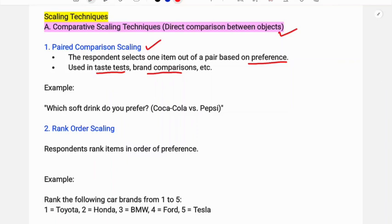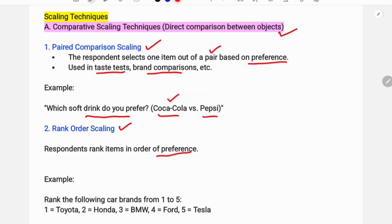One example is paired comparison — for example, which soft drink do you prefer? This is the best option for pair comparison, and it is called paired comparison scale.